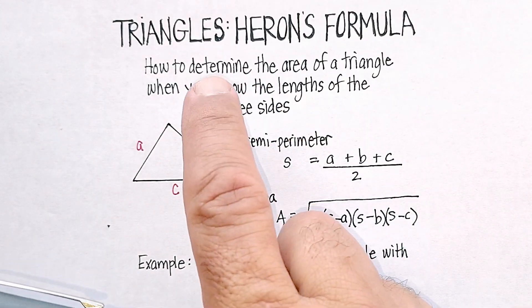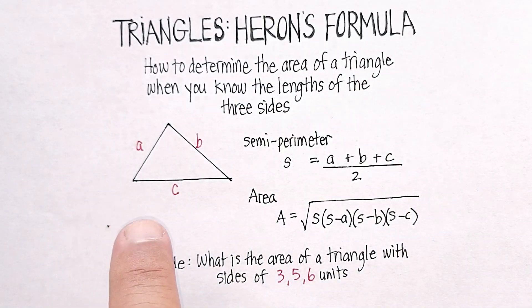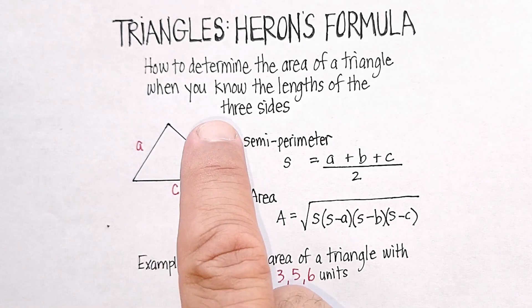We're going to be able to determine the area of a triangle when you know the lengths of the three sides of the triangle.